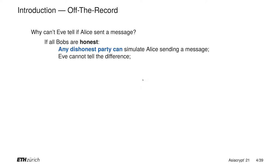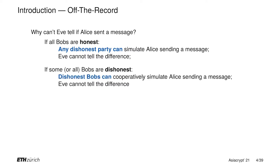Let's see how this is possible. If all Bobs are honest, then any dishonest party can pretend to be Alice sending a message, and Eve simply cannot tell if Alice sent a message or if it is some dishonest party pretending that Alice is sending a message. If some or even all of these Bobs are dishonest, then these dishonest Bobs can cooperatively simulate Alice sending a message. And again, Eve cannot tell if Alice is sending a message or if the dishonest Bobs are simulating Alice sending a message. And this must hold even if Eve knows all of the dishonest Bobs' secrets.